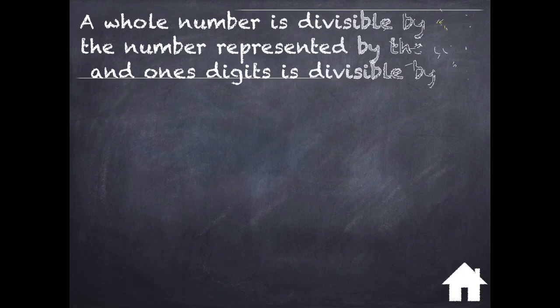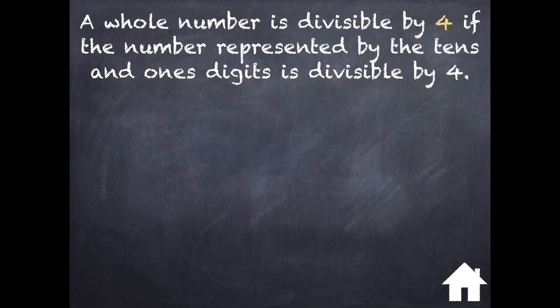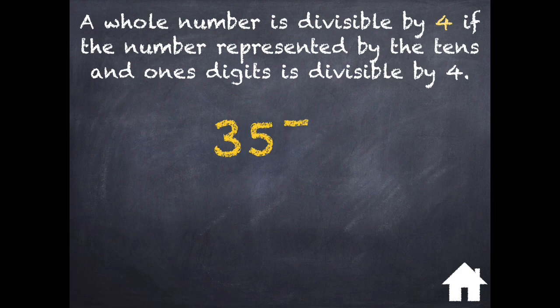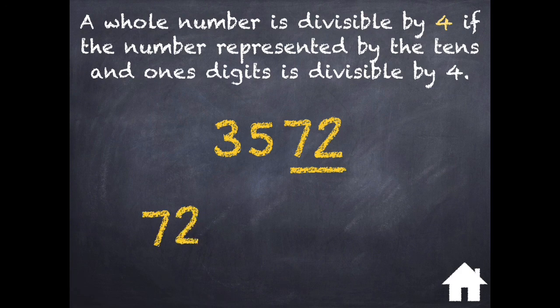A whole number is divisible by 4 if the number represented by the 10's and 1's digits is divisible by 4. Let's take a look at the number 3572. I can look at the 10's and 1's place value and I notice the number 72.